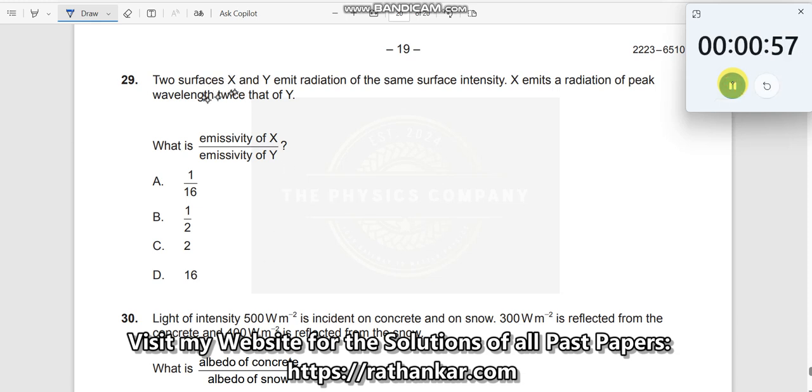Question number 29. Two surfaces x and y emit radiation of the same surface intensity, which means what? I'll write ix is equal to iy.